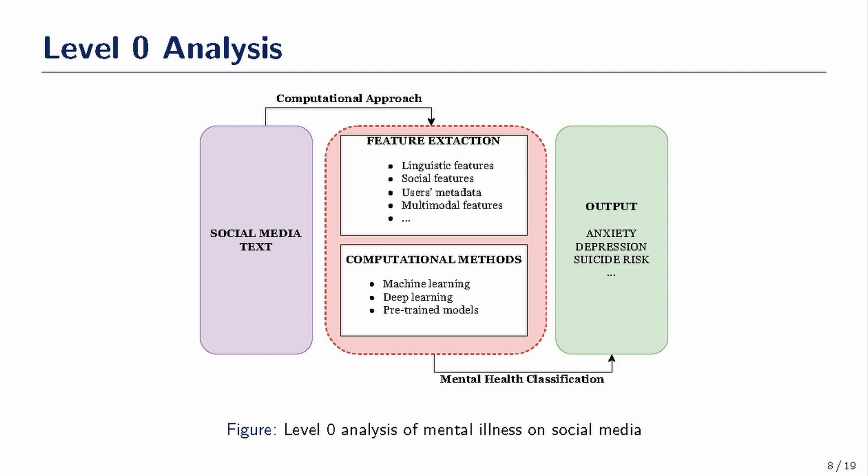Another category is user metadata — for instance, at what time users post, and what location the user is in, since societal context varies by country. We also have multimodal features, such as what kind of avatar a user has on Reddit, whether their profile picture is dark or bright, and so on. These are the different features used for computational mental health classification.